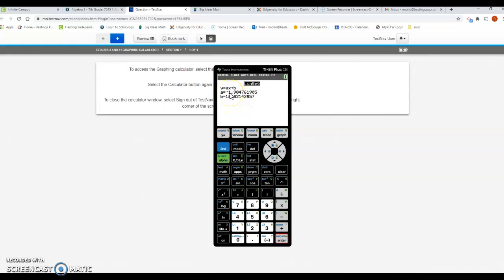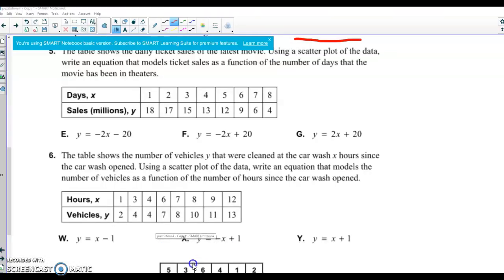So here it's telling us our slope is negative 1.9, and then our Y intercept is about 18.8. So if we look at this back here, so negative 1.9 and 18.8. So negative 1.9 means we know it's not G here because it's not negative 2. And then positive 18.8. So they rounded up and got us to about positive 20 there. So it's going to be letter F.